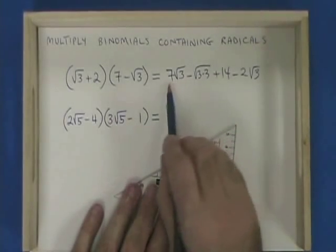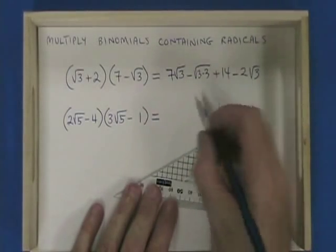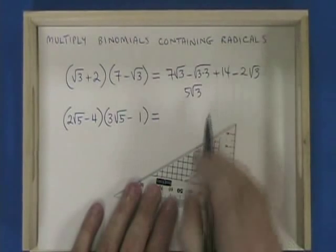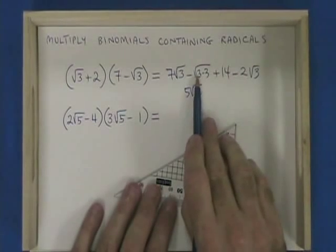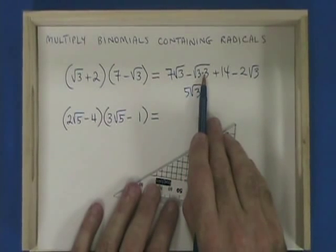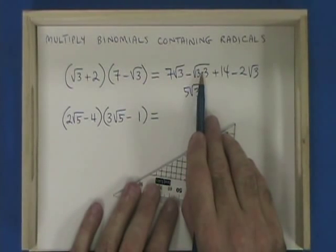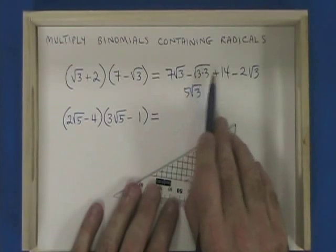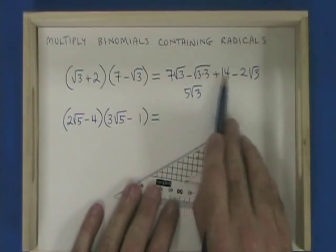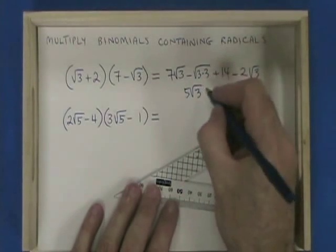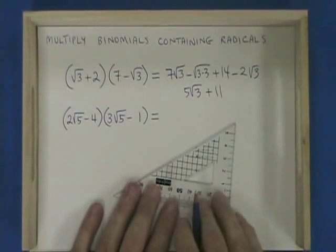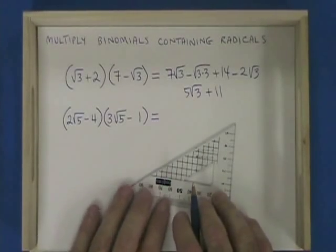7 root 3 minus 2 root 3 gives me 5 root 3. The square root of 3 times 3 is the square root of 9, which is 3. I have negative 3 plus 14, which equals 11. So 5 root 3 plus 11 is my answer.